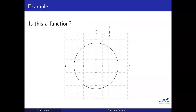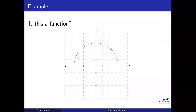Here we've got a circle. For the same reason, using that x equals 2 example, there are two different y values that correspond to that x. So a full circle is not a function. However, the top half of a circle would work — similar to the parabola, there's only one y for each x value I pick. So the top half of a circle is a function.